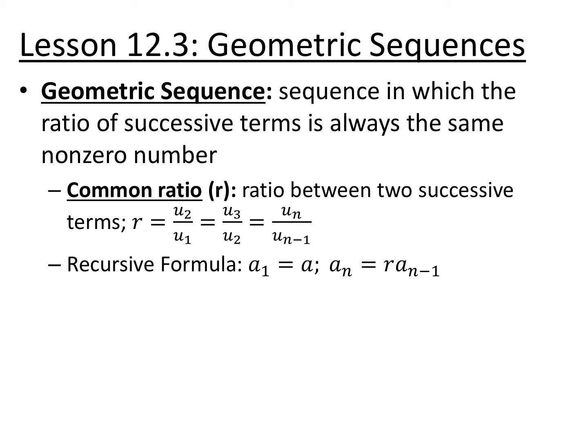The recursive formula — always make sure you label the first term. And then your nth term is your previous term, n minus 1, times your common ratio. Because you have this common multiplier, you're multiplying the same thing every single time. Geometric sequences are the same as exponential functions. Arithmetic sequences are related to linear functions; geometric sequences are related to exponential functions.